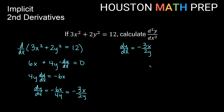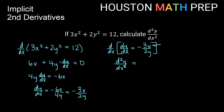Now if I want to take the derivative again, differentiate with respect to x of what I just got, that will give me the second derivative. The derivative with respect to x of dy/dx gives me the second derivative — you might also call it y double prime, or d squared y over dx squared in this notation. Now I need to differentiate this again, but now it's a quotient rule. I have negative 3x as my f and 2y as my g, giving me a quotient rule for the second derivative.